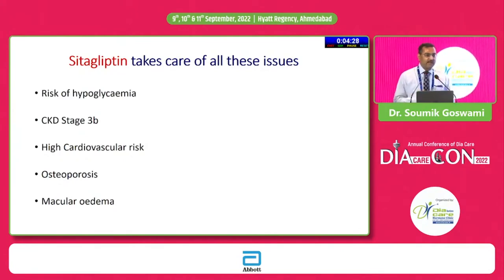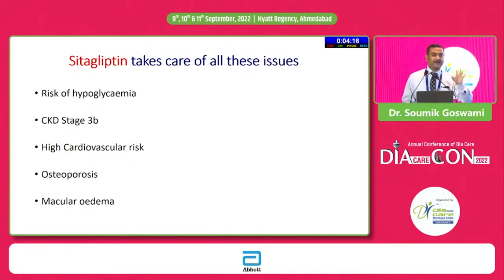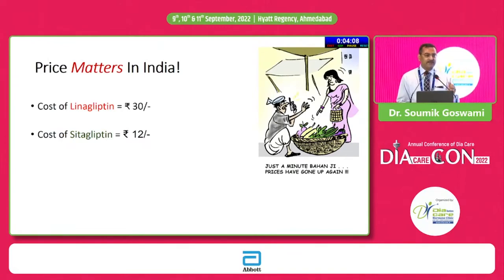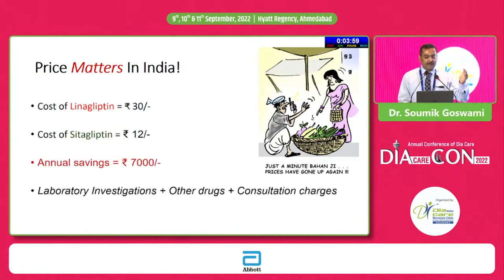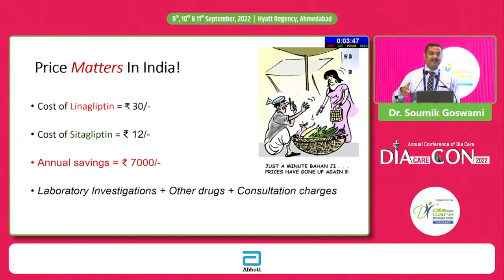You might ask — what about Linagliptin? Linagliptin also addresses all these issues. So why not Linagliptin? I would say yes, Linagliptin would address all these issues too. But when it comes to cost, the equation is different because we are practicing in a country where out-of-pocket expense is a big concern. The average price of Sitagliptin has come down with generic versions available. With the money a patient could save from using Sitagliptin instead of Linagliptin, they could pay for consultations, laboratory investigations, and afford other drugs like a statin, ARB, etc., required for diabetes management.